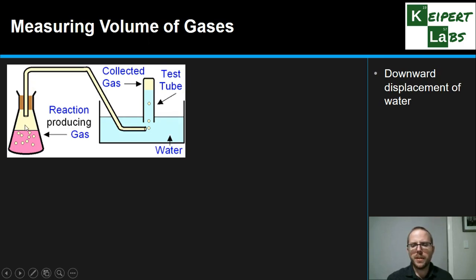The first one is what we call the downward displacement of water. So where we've got a reaction or a process that generates or produces a gas, we funnel it up through a glass or plastic or rubber tube into this container here, where we're collecting it in an inverted thing like a test tube or a measuring cylinder, or even this glass equipment called a gas jar.